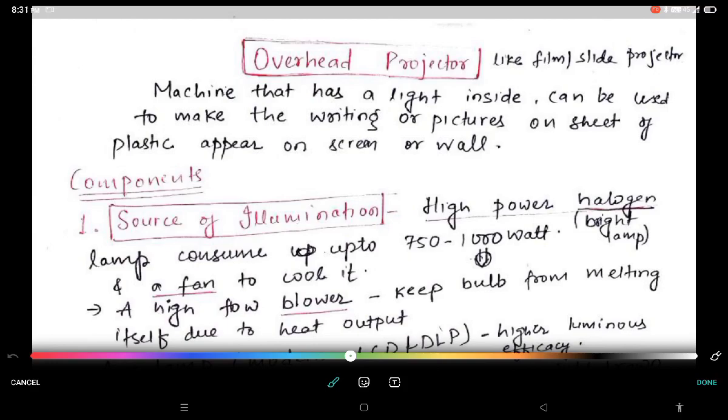What is overhead projector? So overhead projector is a film slide projector that has light inside - light means halogen lamp is there - which is used to make the writing or pictures that is placed as transparencies on the top of lens appear on the screen and wall in enlarged form.